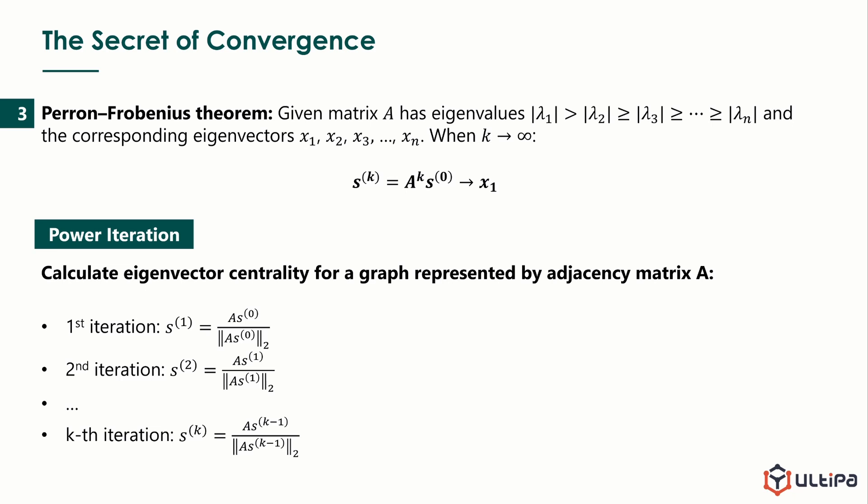Based on this theorem, the calculation of eigenvector centrality for a graph is actually the calculation of the dominant eigenvector of its adjacency matrix A. This method is called power iteration. Start with an initial vector. In each iteration, multiply it with matrix A and apply normalization. Iterate until it converges to some preset extent.